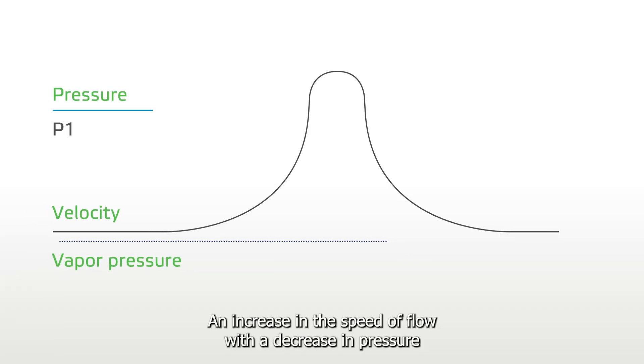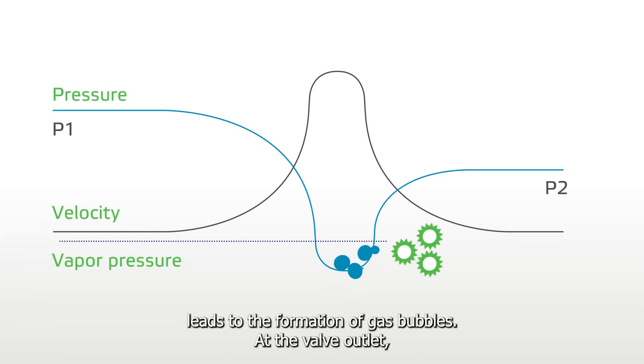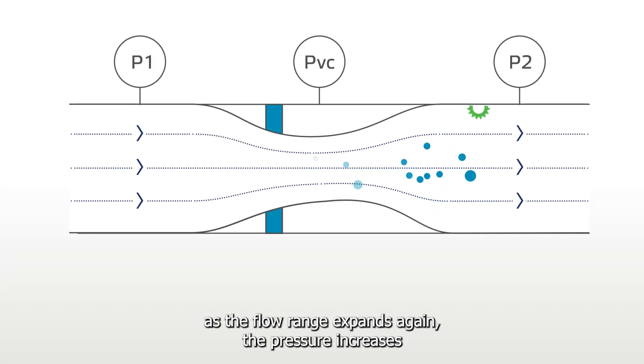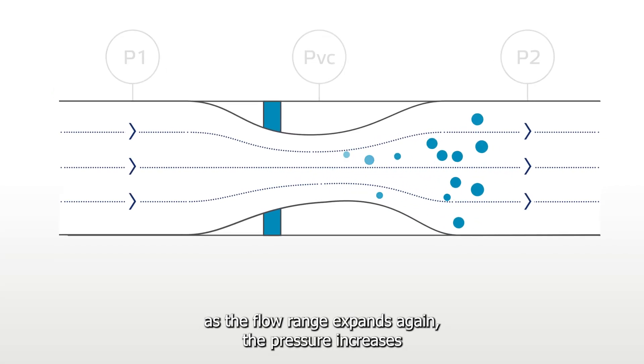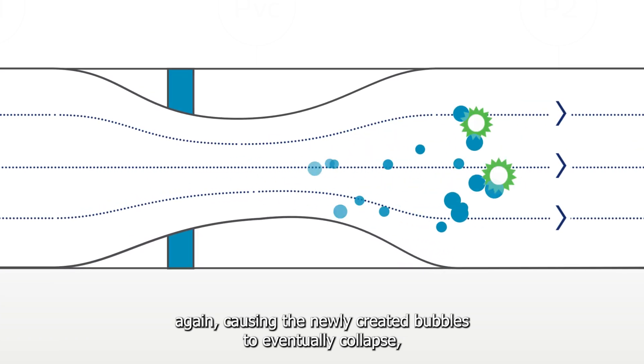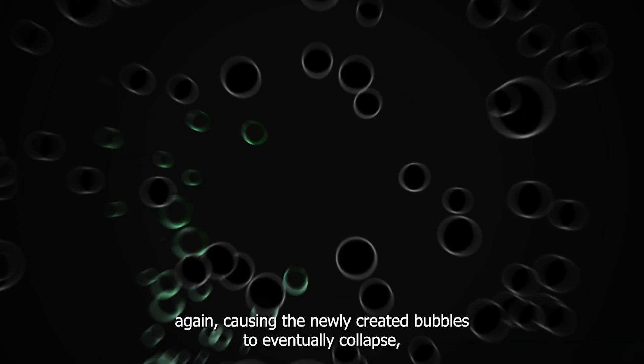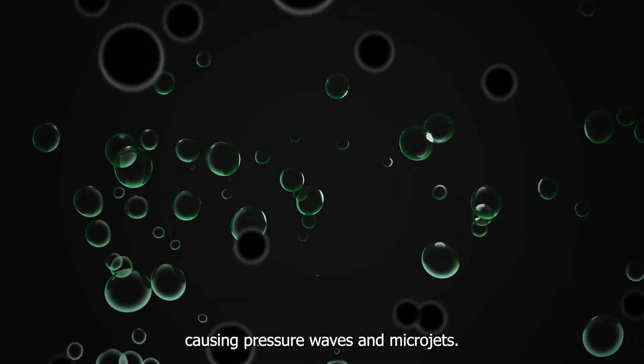An increase in the speed of flow with a decrease in pressure leads to the formation of gas bubbles. At the valve outlet, as the flow range expands again, the pressure increases again, causing the newly created bubbles to eventually collapse, causing pressure waves and microjets.